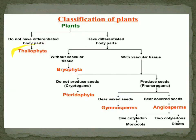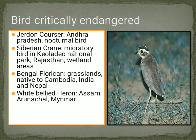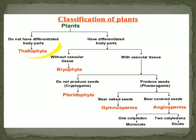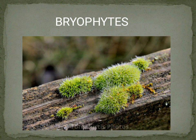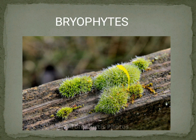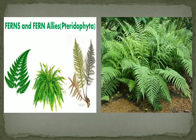The classification goes: Thallophyte, Bryophyte, Pteridophyte, Gymnosperm, and Angiosperm. Bryophytes have some body structure like grass, but roots are not visible. Pteridophytes are plants where you can see roots, leaves, branches — everything is visible.